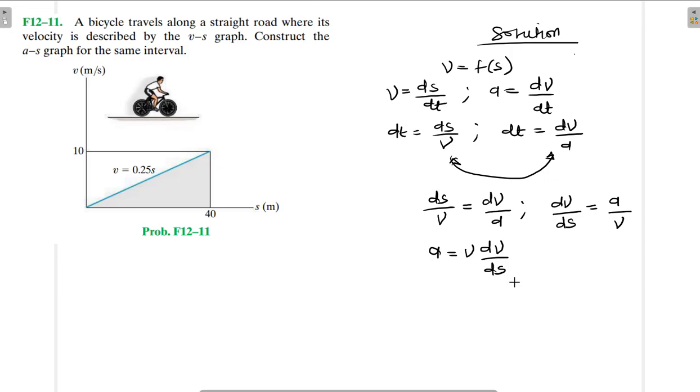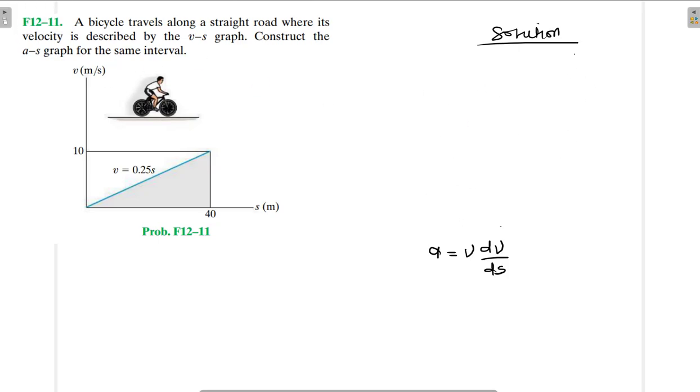So we have this relationship where acceleration is equal to velocity times dv/ds, and we have v is equal to 0.25s. In my videos to come I'll just be writing this relationship directly. So we know that this is the case here.